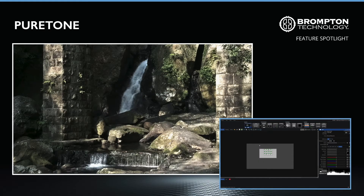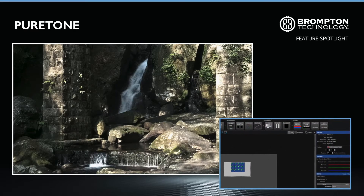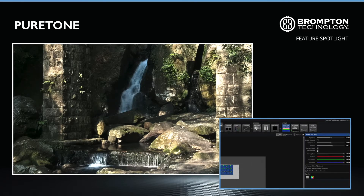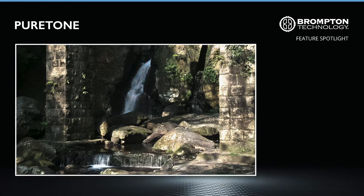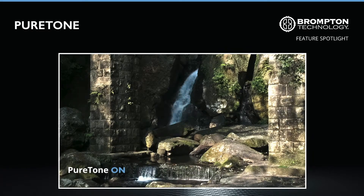To turn PureTone on, simply select your LED panels within the Tessera software interface, and under Global Colour, tick the Use PureTone checkbox. Here are two pictures of an LED wall showing the same image with the PureTone feature turned on and off. As we switch between the two, notice how there is a clear colour shift within the darker areas of the picture.